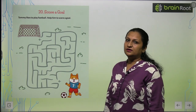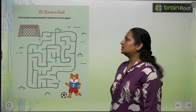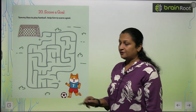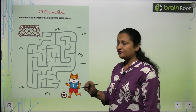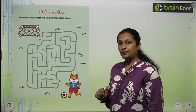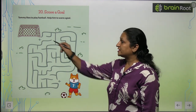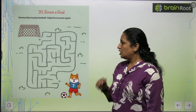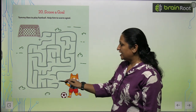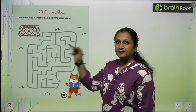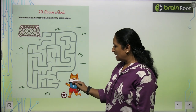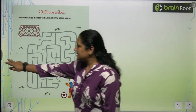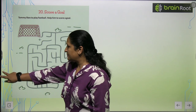Chapter number 20: children score a goal. Here, a child is playing football and has to score a goal. We have to trace the path — going from here to complete this path.